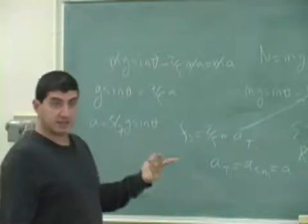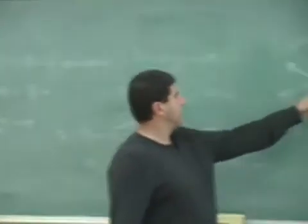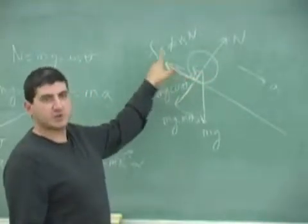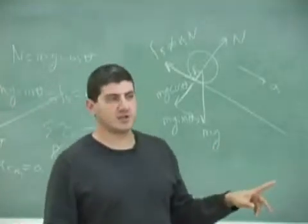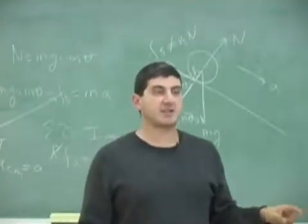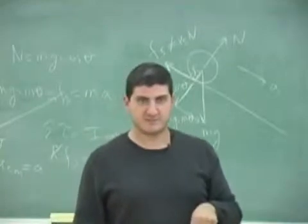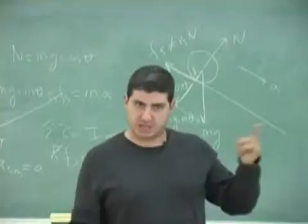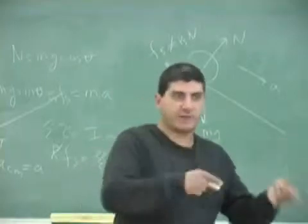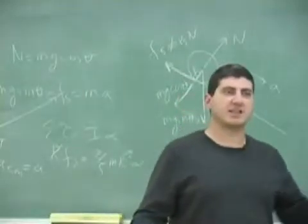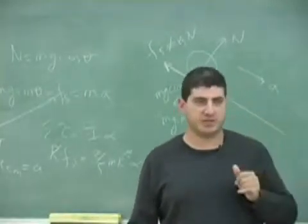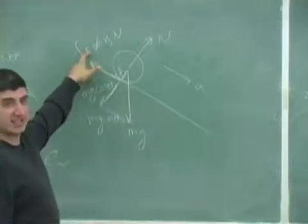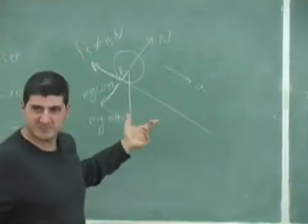Another way to explain why the acceleration is less is because it's rolling — there has to be friction that's making it roll. The thing that's making it roll is the Fs. The Fs is causing it to accelerate less than if it was a block without friction. So the very force that is causing it to roll is also slowing it down — the Fs.